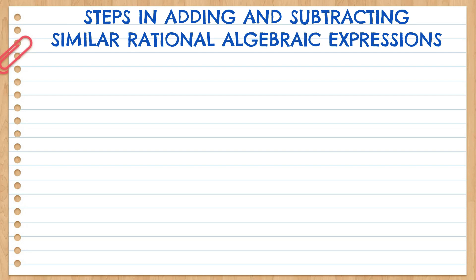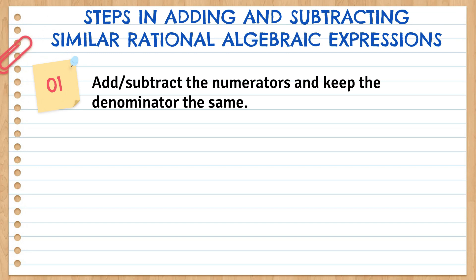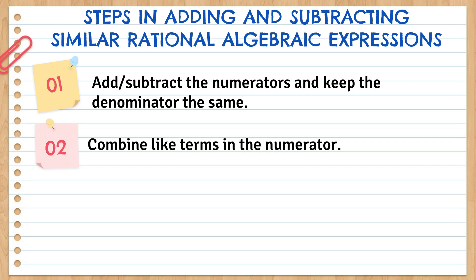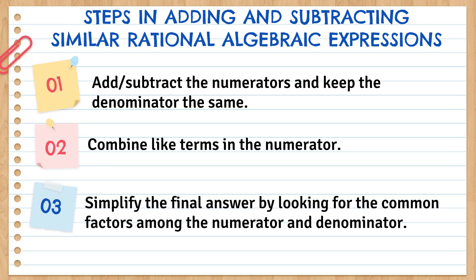What are the steps in adding and subtracting similar Rational Algebraic Expressions? Step number one: add or subtract the numerators and keep the denominator the same. Step number two: combine like terms in the numerator. Like terms are terms with the same variables with exactly the same exponent. Step number three: simplify the final answer by looking for the common factors among the numerator and the denominator. We're still going to use factoring to arrive at the simplified form of our final answer.